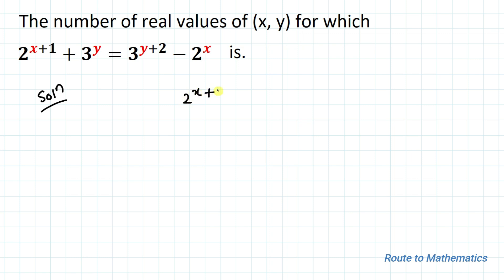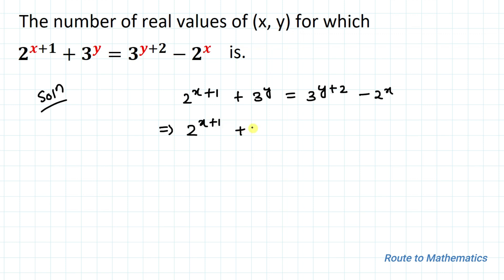Without any delay, let's start the solution. We have the equation: 2 to the power x plus 1, plus 3 to the power y, equals 3 to the power y plus 2, minus 2 to the power x. In the next step, let's take all the terms with base 2 to the left-hand side: 2 to the power x plus 1, plus 2 to the power x. And all the terms with base 3 to the right-hand side: 3 to the power y plus 2, minus 3 to the power y.